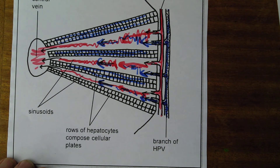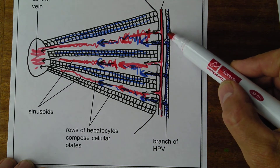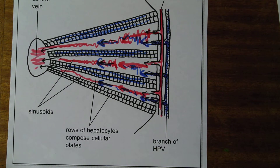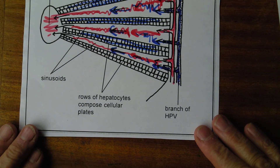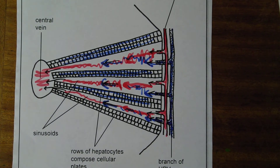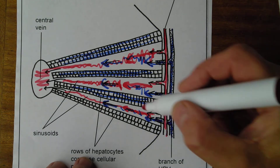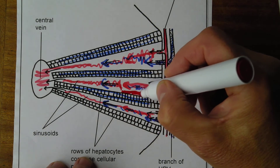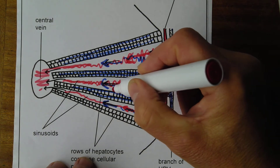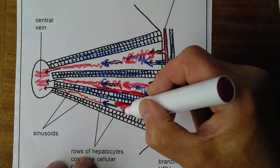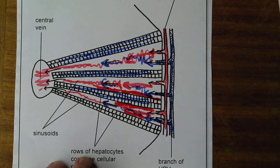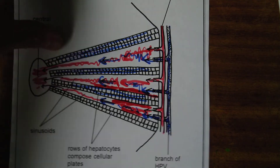Blood is going into the sinusoid through a branch of the hepatic portal vein and a branch of the hepatic artery. The liver cells — the hepatocytes — produce bile. One side of the hepatocyte is the blood-facing side, in contact with the blood, while the middle part between rows of hepatocytes is the bile-facing side.